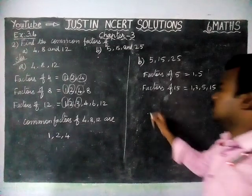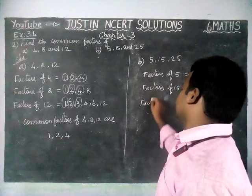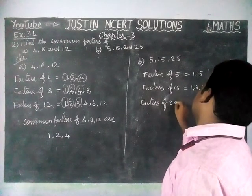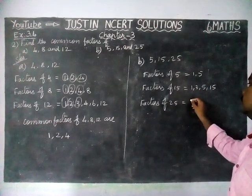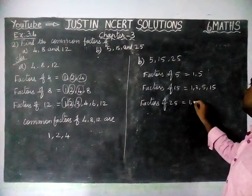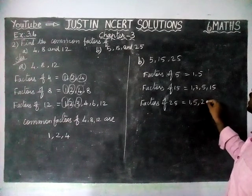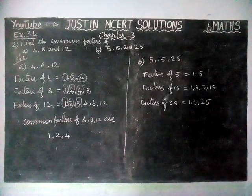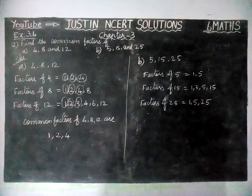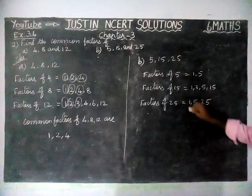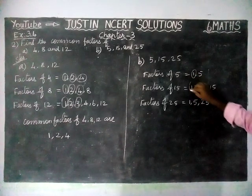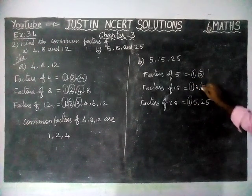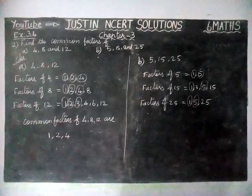Next, factors of 25 are equal to 1, 5, and 25. We have only 3 factors for 25. Now we have to find all the common factors which appear in all 3 places. 1 is common in all 3 places. Factor 5 is also common in all the places.